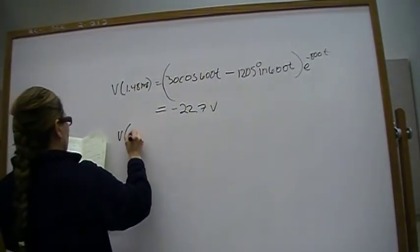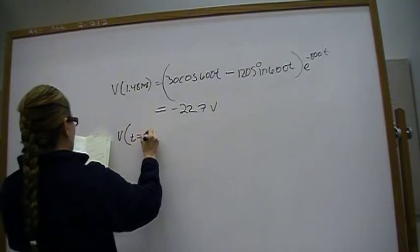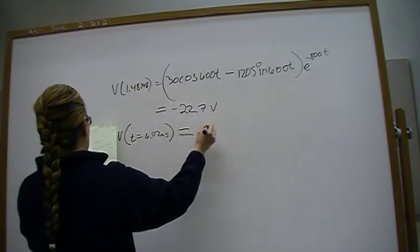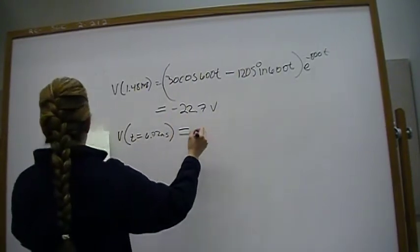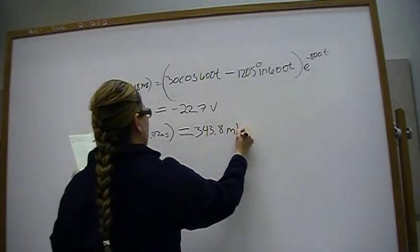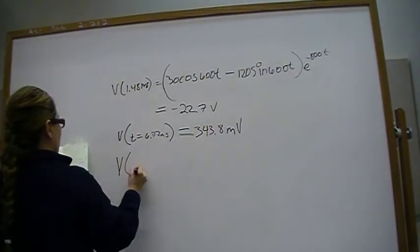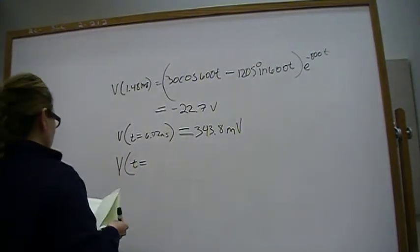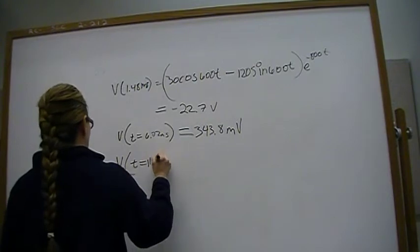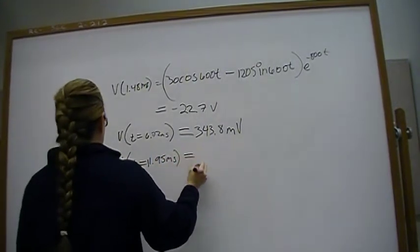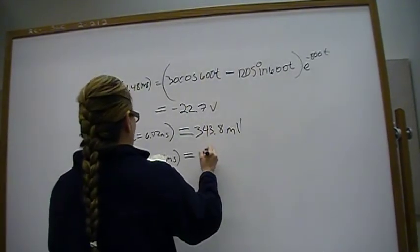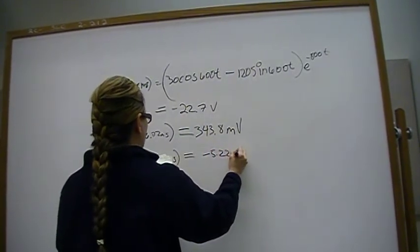v of t2 is equal to 6.72 milliseconds. You should get 343.8 millivolts. v of t3 is equal to 11.295 milliseconds. It should give you negative 5.22 millivolts.